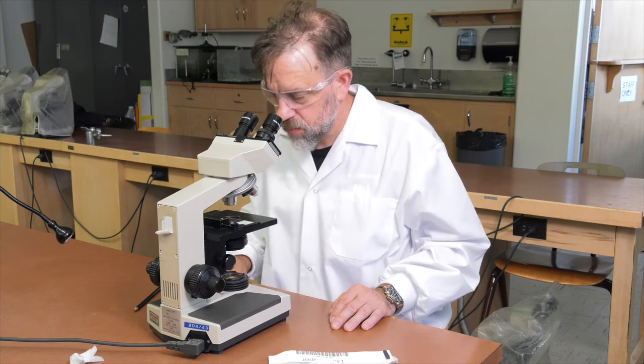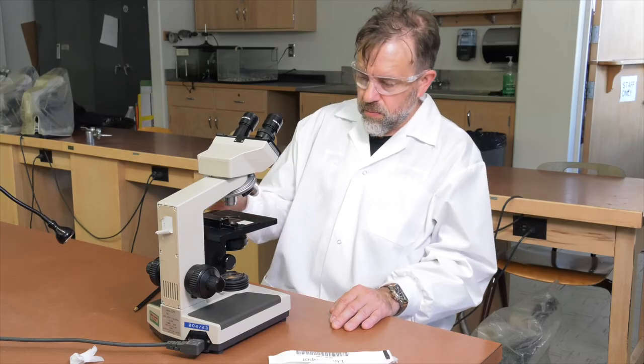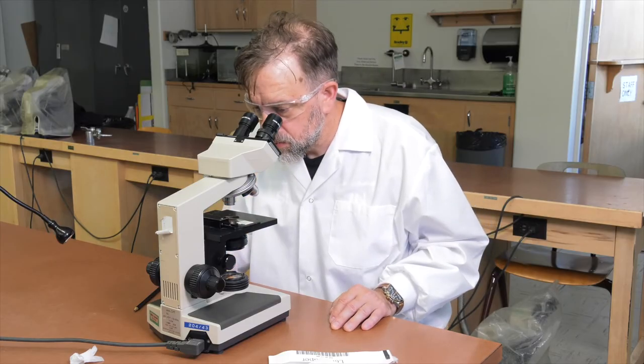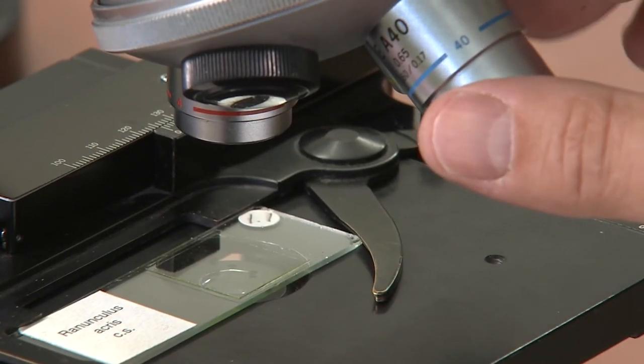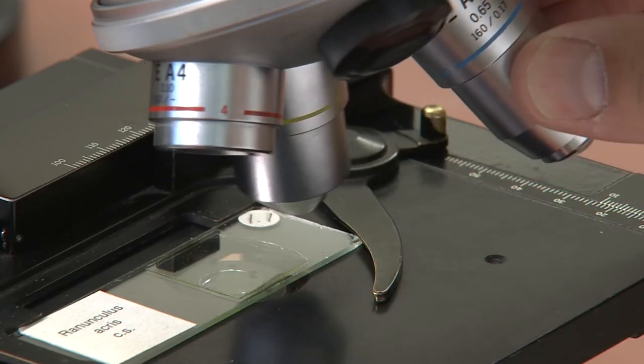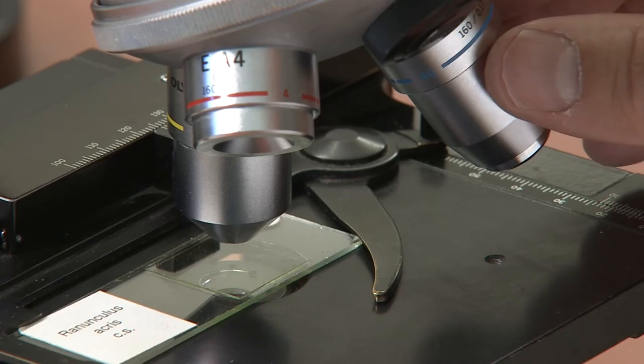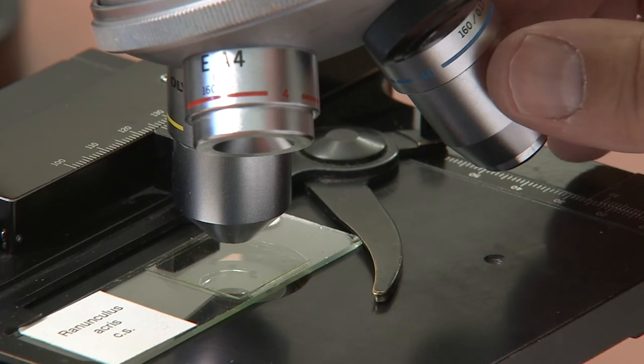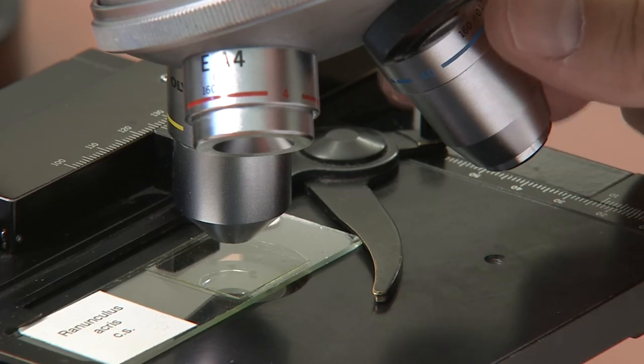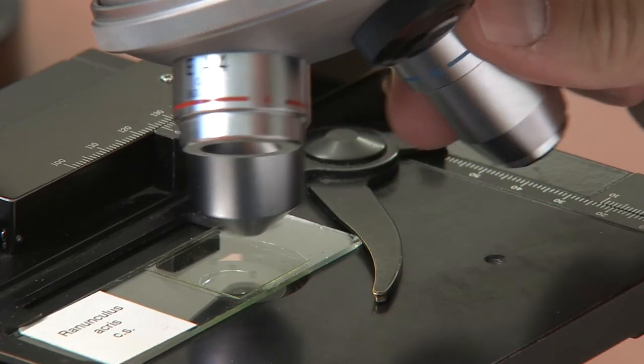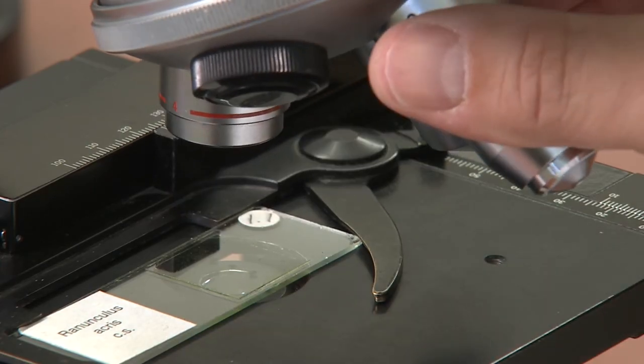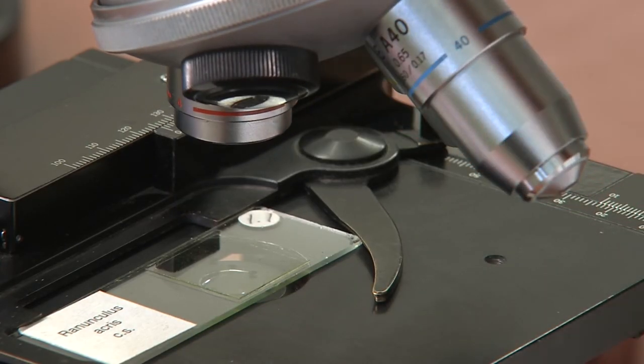Now that your microscope is set, you are ready to switch to the 10x objective. Center the specimen in the field of view and rotate the nose piece so that the 10x objective clicks into position. If your specimen is not centered, you may lose it during this step. If that is the case, just rotate back to the 4x objective and center your specimen.